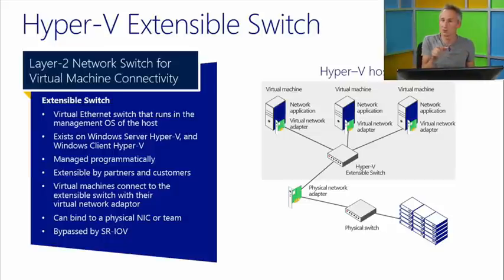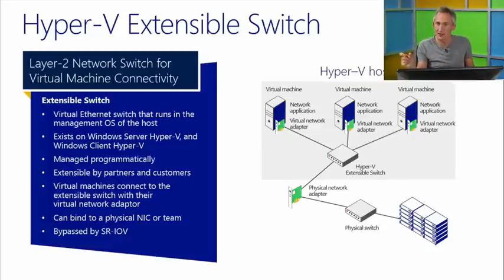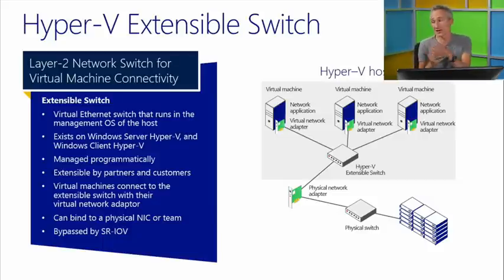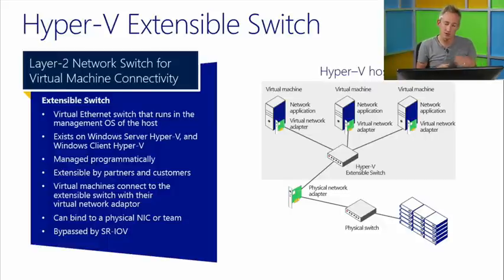Recall from part 1 the discussion of SR-IOV — single-root I/O virtualization — where a physical NIC with SR-IOV capability plugs its virtual function directly into the virtual machine. That bypasses the extensible switch, so the VM is connected directly to the physical NIC without using Hyper-V extensible switch processing. You can get increased performance, lower latency, and lower CPU utilization with SR-IOV, but you lose some of the benefits that come with the extensible switch.